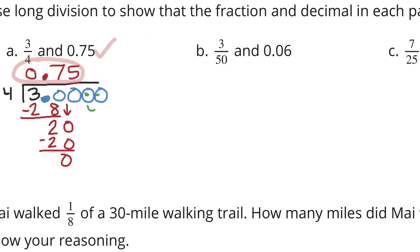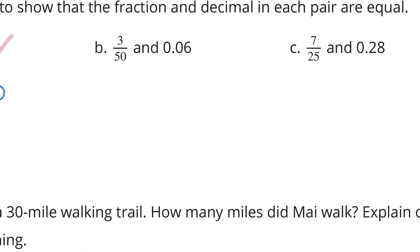As we slide to question B, 3/50 and 6 hundredths. 3 on the inside, 50 on the outside. We'll put in our decimal point and some zeros. 50 does not go into 3. In fact, it does not go into 30 either. But it goes into 100 six times, and 6 times 50 is exactly 300. We have a remainder of 0. So we have 6 hundredths for 3 divided by 50, which is the same thing as 6 hundredths.